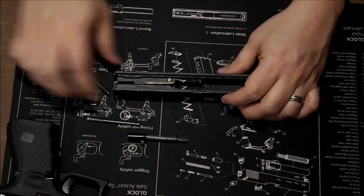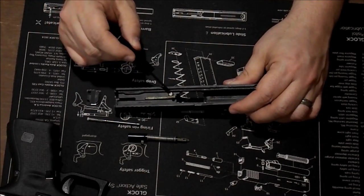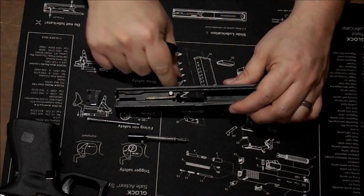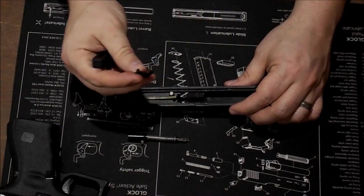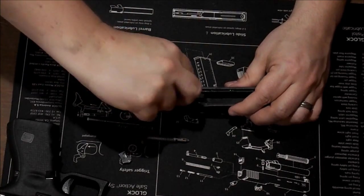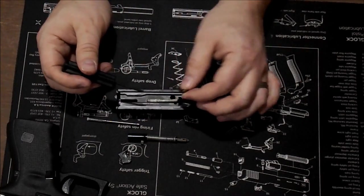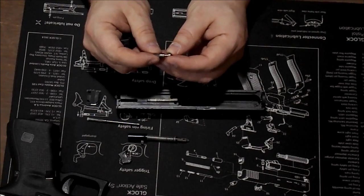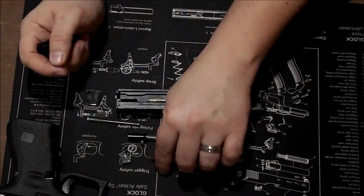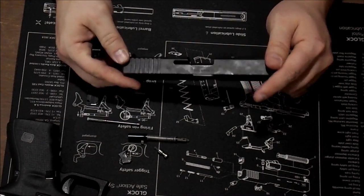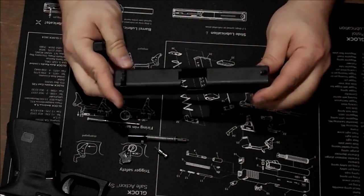Next, you have your firing pin safety, which is this little button right here. You just push down on that a little bit, and your extractor will fall out. Just fall straight out. And then you can just reach down and pull your firing pin safety out. There's also a spring involved there. Just don't lose that. We want to keep that available. And that, minus your sights, is complete disassembly of a Glock slide.